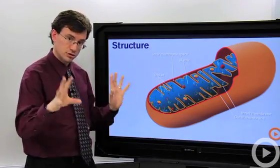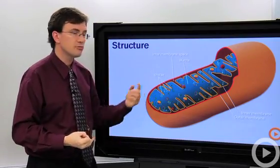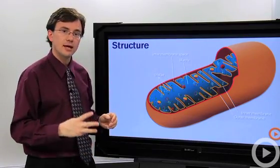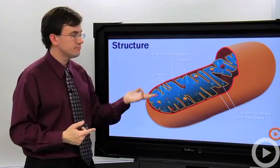To summarize, mitochondria is the powerhouse of the cell. It does aerobic respiration, the breakdown of glucose using oxygen. And it is one of the three major endosymbiotic organelles: the nucleus, chloroplast, and mitochondria.